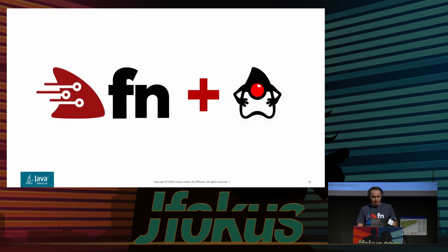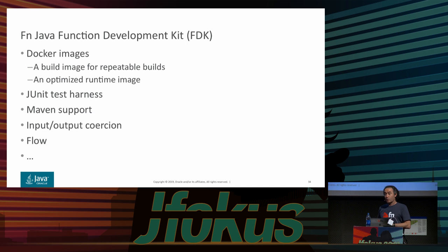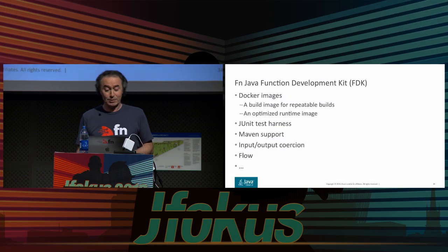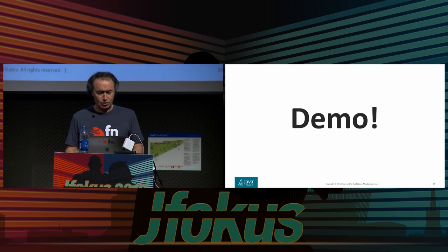Let's take a look at FN and Java support. We have a Function Developer Kit, an FDK. For Java, the FDK has Docker build images containing Java and Maven to compile your code, and images designed to just run your compiled code at runtime. We have JUnit support so you can write unit tests locally without deploying to the cloud. We support Maven for builds today. There's also nice input/output coercion. So let me go to code — I'll start the FN server with `fn start -d` for daemon mode.